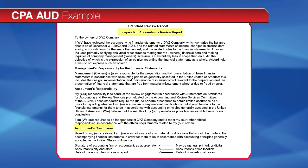If the conclusion is modified, a basis for conclusion paragraph describing the cause of the modification is also included. The report is signed by the accountant or the accountant's firm, and the city and state where the accountant practices are also identified. The report ends with the date of the review report, which should be dated no earlier than the date on which the accountant has obtained sufficient appropriate review evidence to support the conclusion. The accountant should consider including an alert on each page of the financial statements referring readers to the Independent Accountant's Review Report.